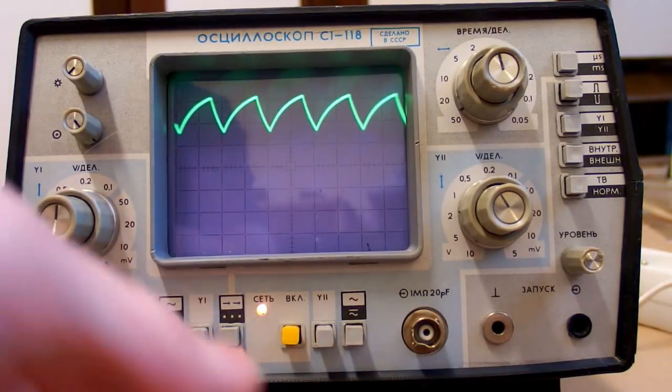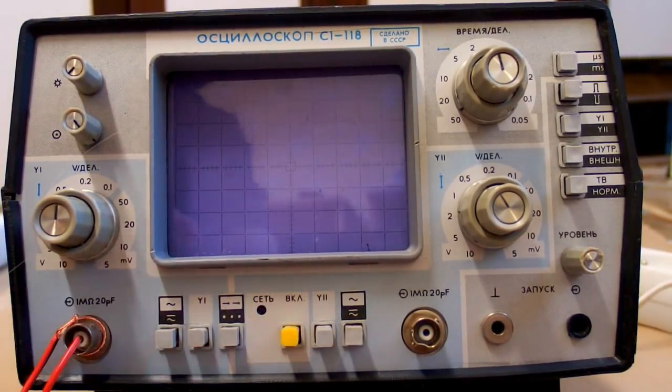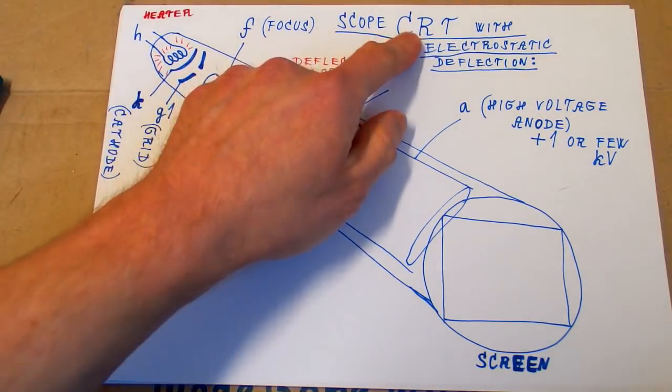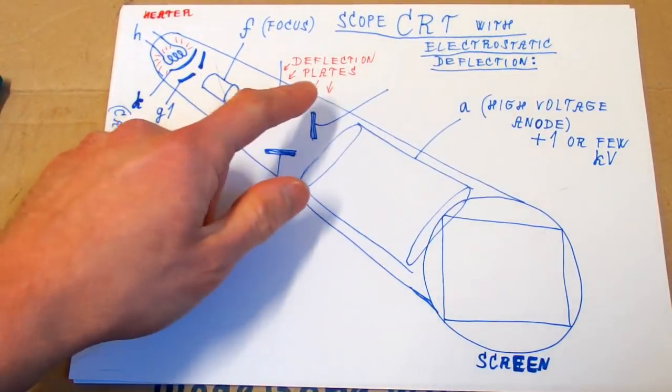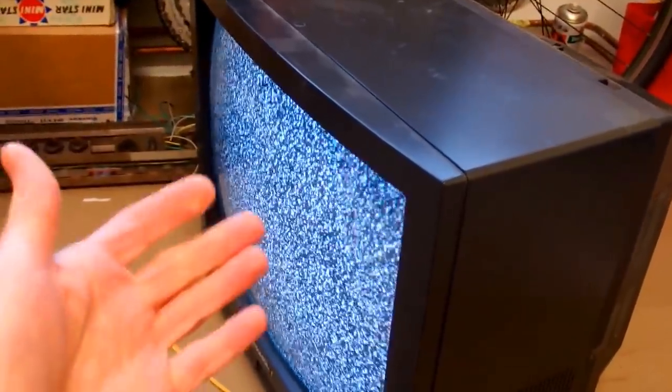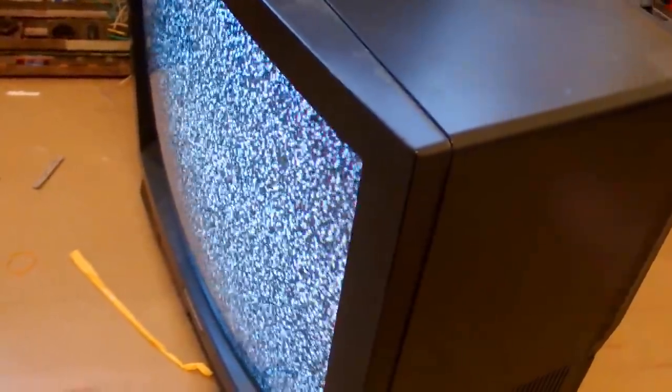But now let's explain how does it actually work. So the main part of a classic oscilloscope is a CRT with electrostatic deflection using deflection plates. A CRT television has deflection coils in it, not plates. Which is good because the deflection angle is much higher and so the television doesn't have to be so long.